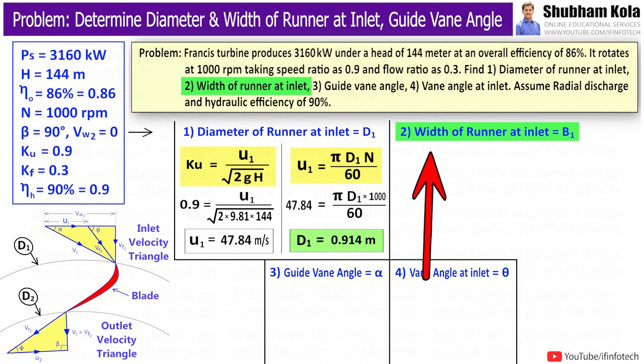Now, next we need to find out width of runner at inlet, denoted as B1. To calculate this value, I will use discharge equation. Here, unknown values are Vf1, i.e. velocity of flow at inlet, and Q, i.e. discharge.